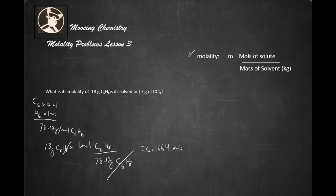And then we've got dissolved in 17 grams of carbon tetrachloride. So we've got to turn that into kilograms. Okay, so write 17 here. Give it a decimal, 1, 2, and 3. That's 0.017 kilograms.